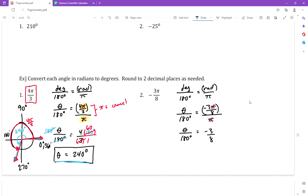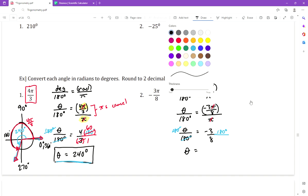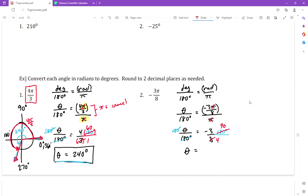We want θ by itself so we multiply both sides by 180. The 180s on the left cancel and we're left with θ equals, over on the right you can do a little simplifying. 180 and 8 are each divisible by 2, so that would become 4 and that would become 90. 90 and 4 are each divisible by 2, so that would become 2 and that would become 45.